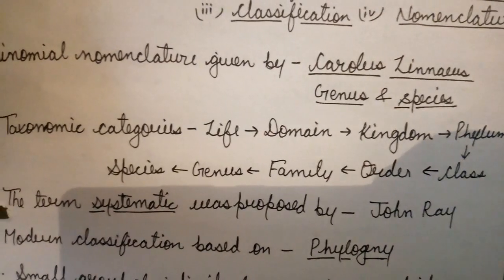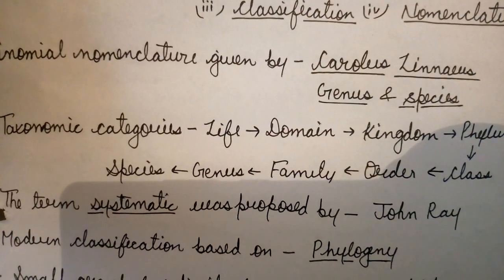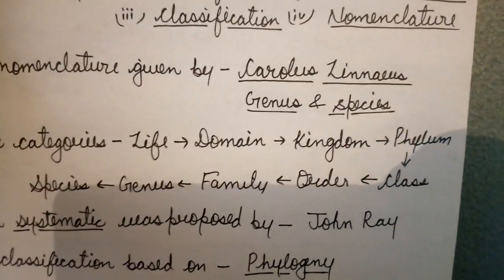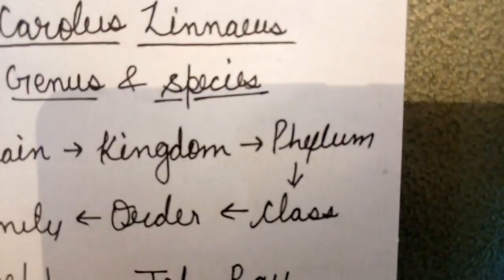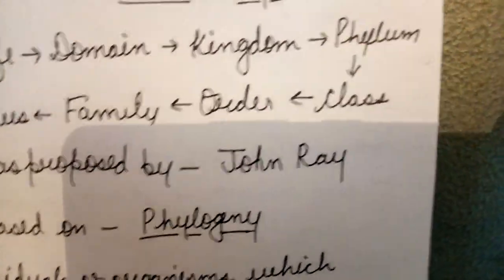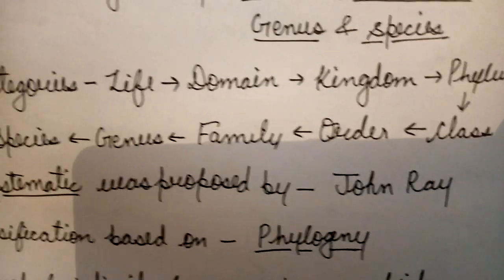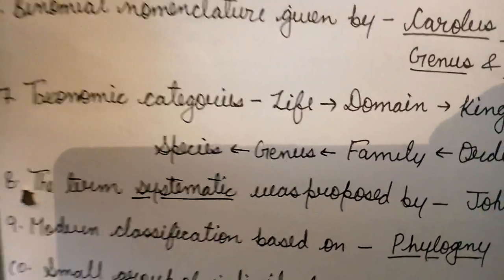Next are taxonomy categories. There is a descending order of taxonomy categories: life, domain, kingdom, phylum. After phylum, we classify organisms into class, then order, family, genus, and species. Species is the last and the basic unit of taxonomy categories.